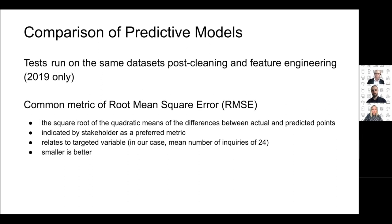We chose Root Mean Square Error (RMSE) as our metric for understanding model performance — it measures the differences between actual and predicted values using the square root of the quadratic mean. Traumferienwohnungen confirmed this was an appropriate metric, as it relates directly to the target variable: number of inquiries. We were working with a baseline of 24 inquiries per property, and a smaller RMSE indicates better model performance.